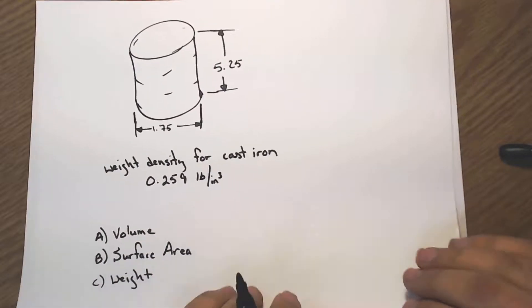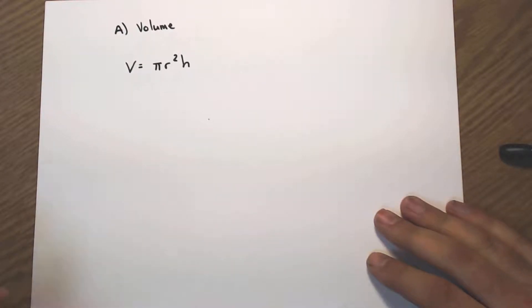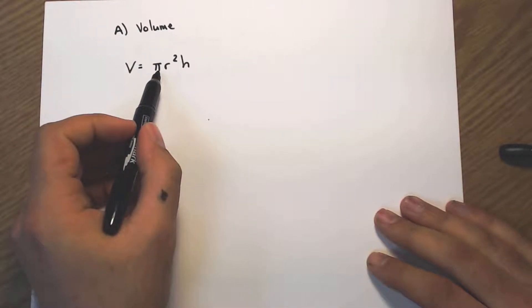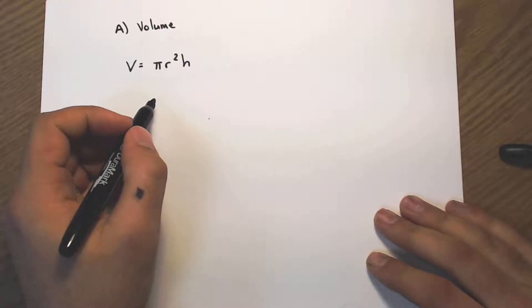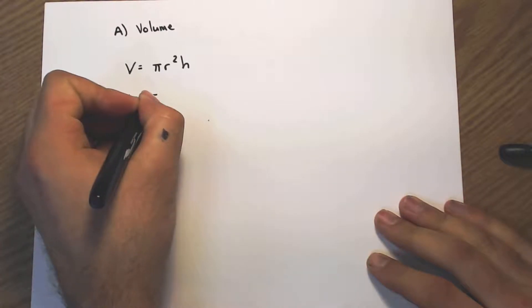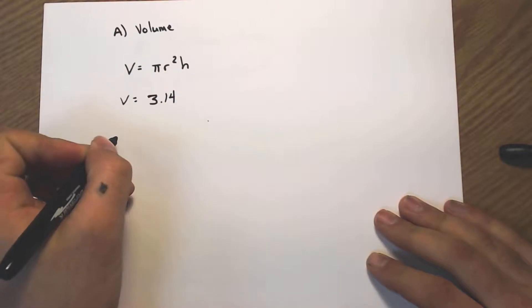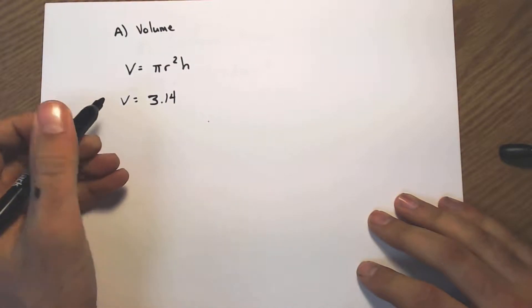So we start off with volume, and volume formula for a cylinder is π r² times h. I have to start substituting in the things I know. Still don't know volume, that's what I'm solving for, but pi is 3.14.